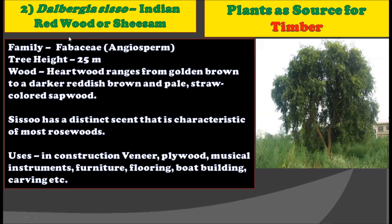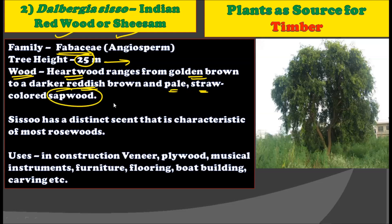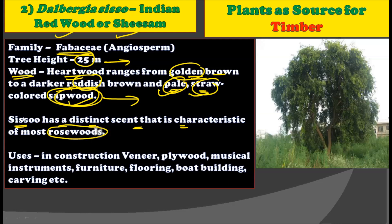The second plant is Dalbergia sissoo, also called Indian Rosewood or Shisham. This Dalbergia sissoo plant belongs to the angiosperm family Fabaceae. The height of this tree may reach up to 25 meters. The hardwood ranges from golden brown to darker reddish brown, while the sapwood is pale to straw colored. Sisu has a distinct scent that is characteristic of most rosewoods, which adds to the value of this timber.